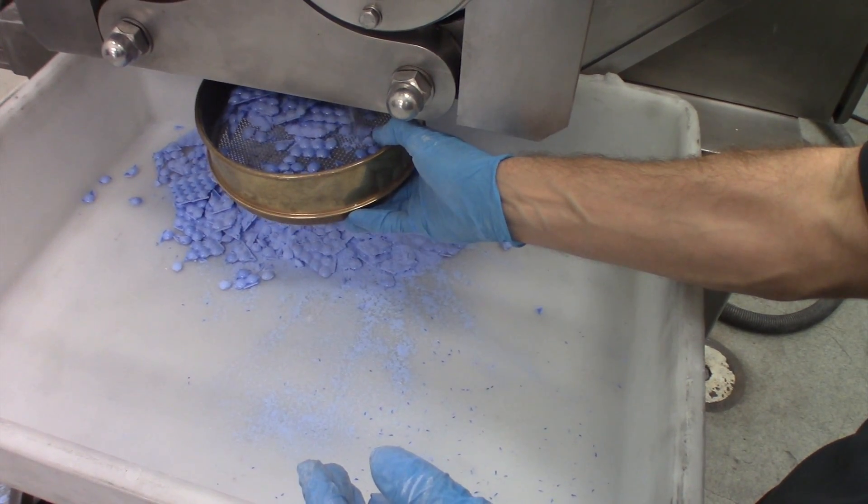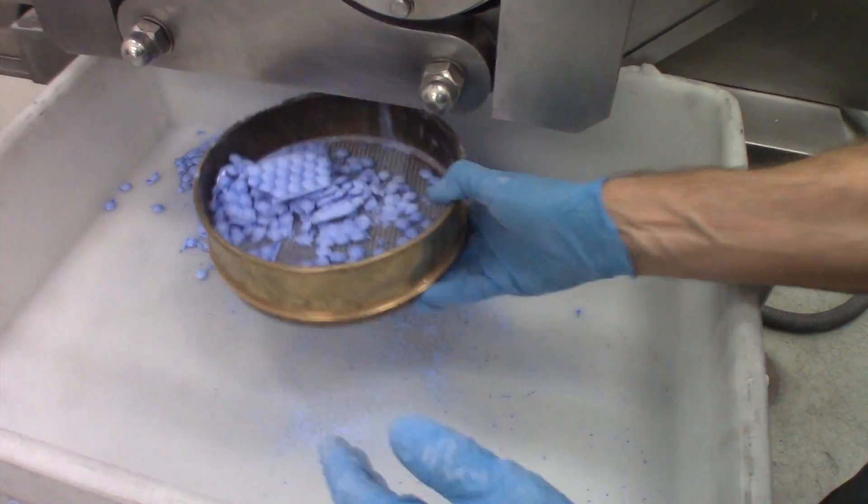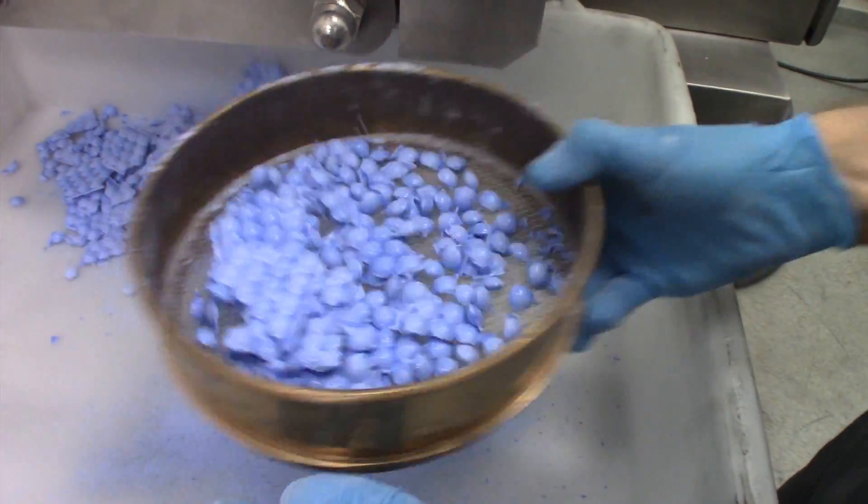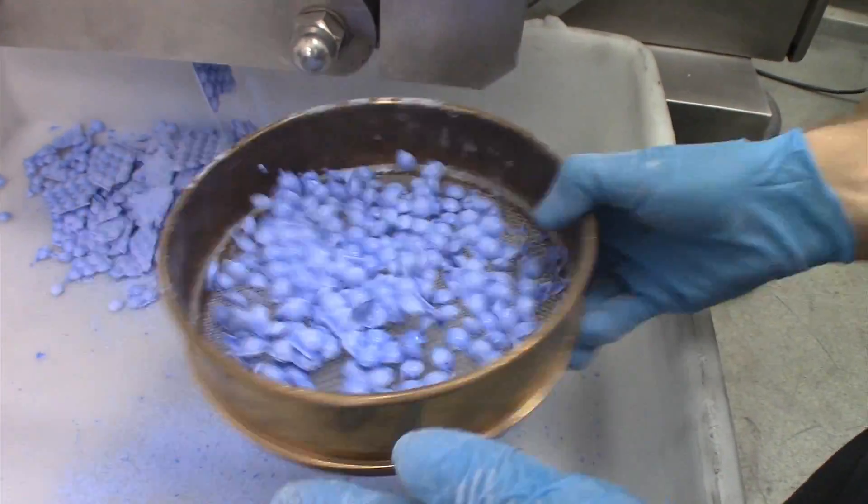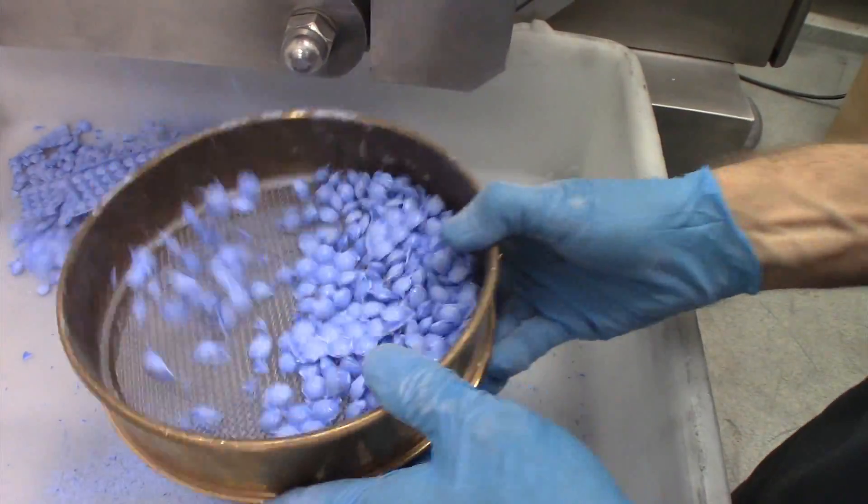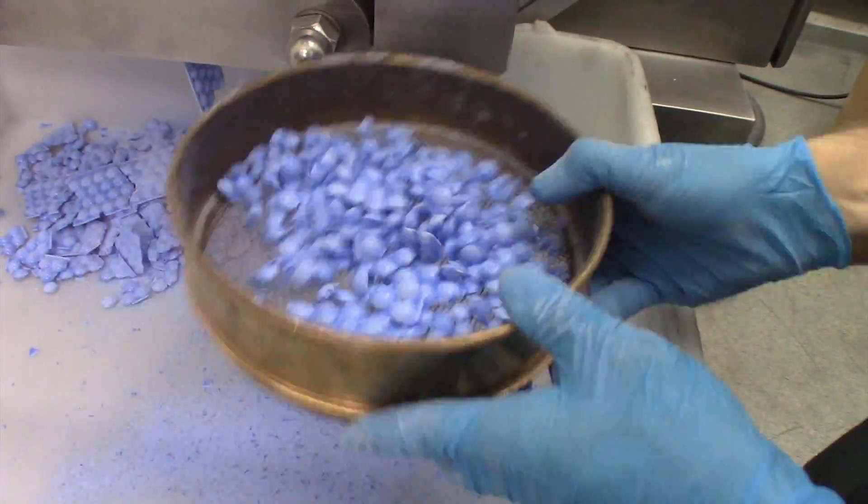As the material exits the compactor, the briquettes are connected by thin ribbons. The briquettes are separated from the ribbon with minimal oscillation.